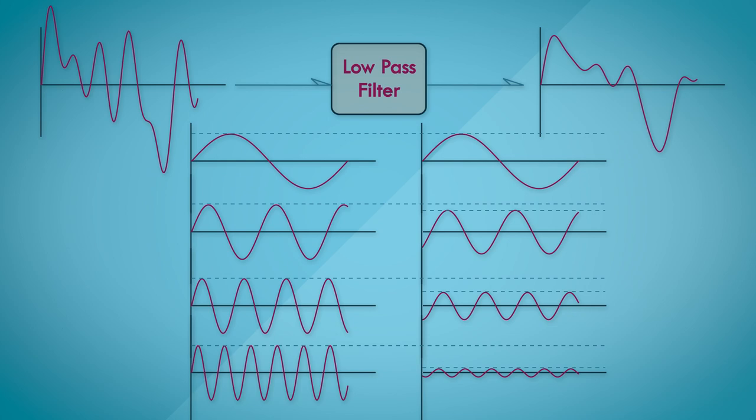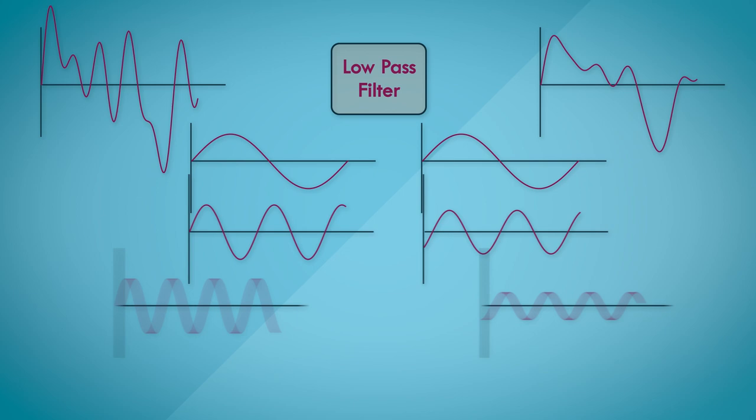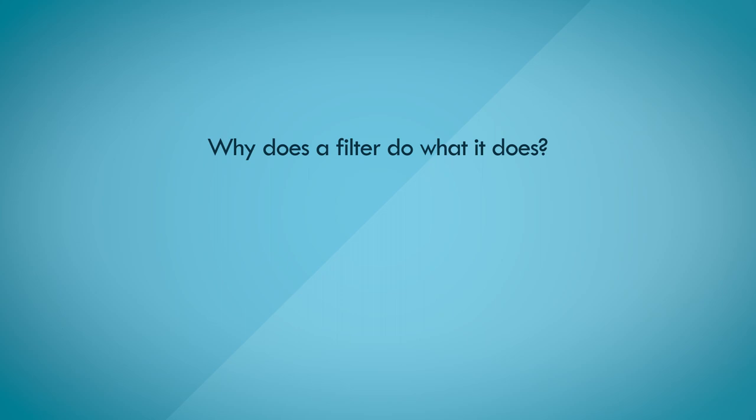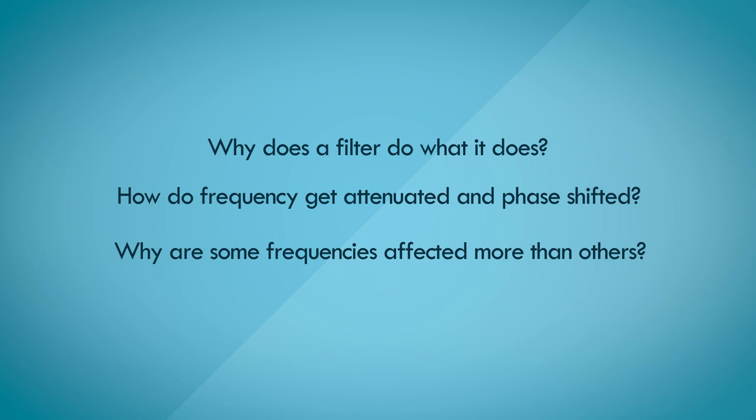So we've learned what a filter is, and what it does, and how to observe what it does. But why does it do what it does? The fairly obvious questions that you may have at this point of time are, how do frequencies become attenuated or phase shifted through the digital filter? And why are some frequencies affected more than others? These are some of the questions that we'll try to answer in the following videos to come. I'll see you there.